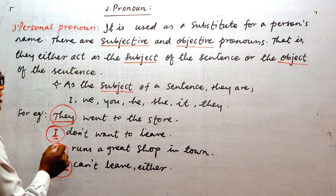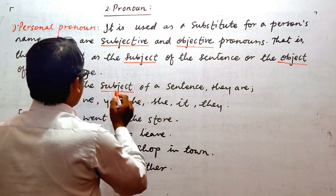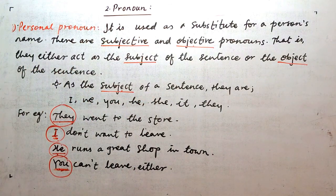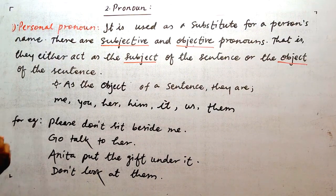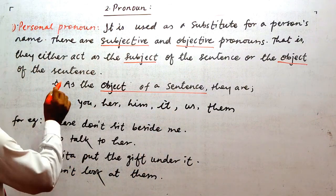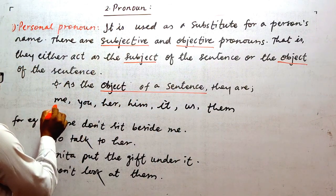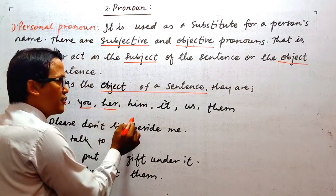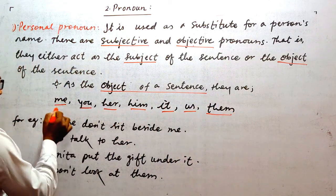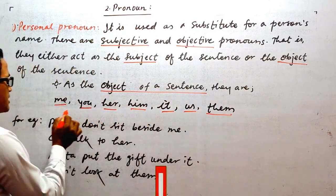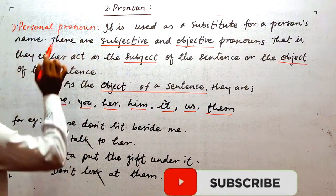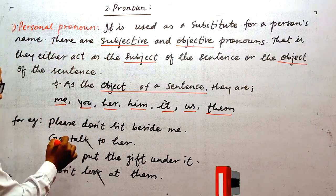As the object of the sentence they are: me, you, her, him, it, us, them. So they are objects used in the sentence as object case. They are object in the sentence and they are also personal pronouns. Let's see in the examples.